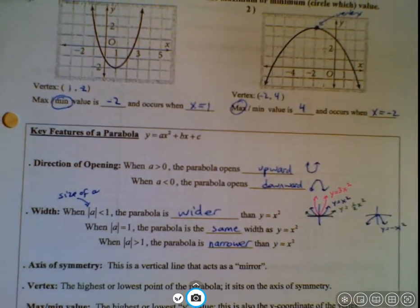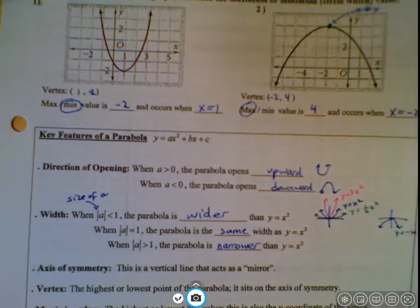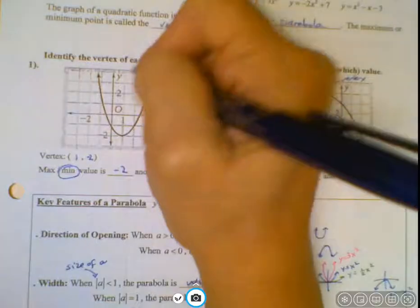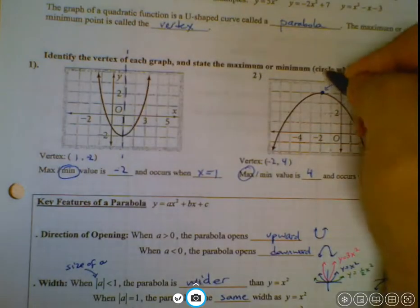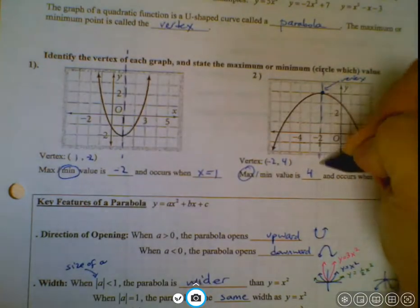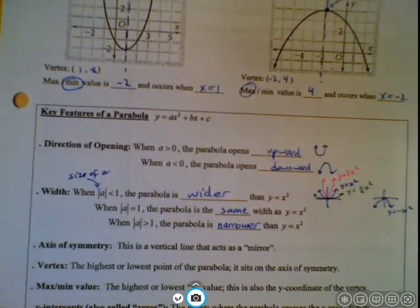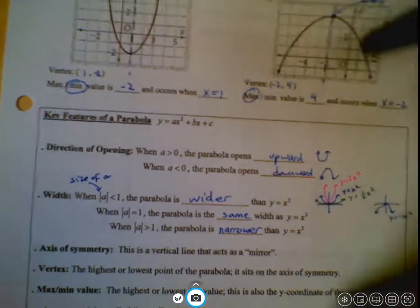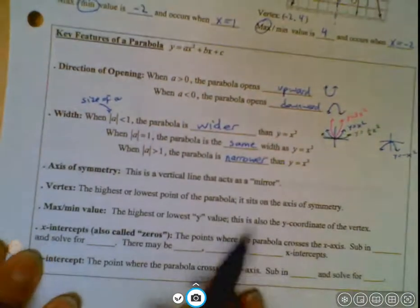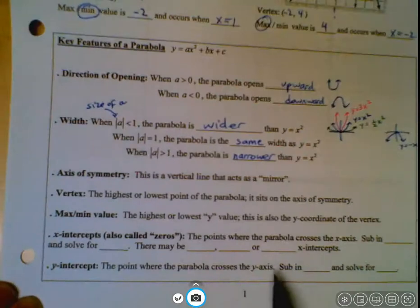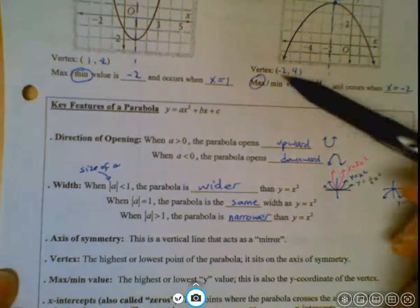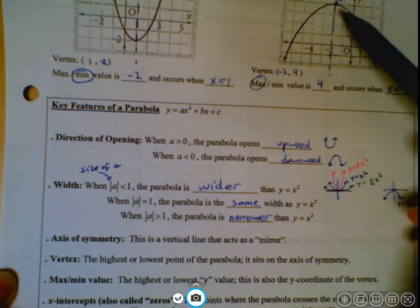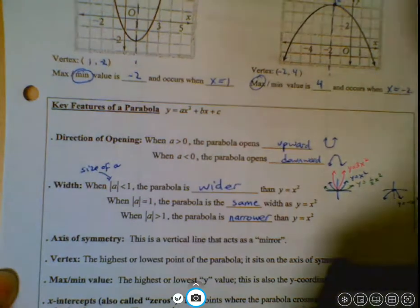The axis of symmetry is a vertical line that acts like a mirror — the parabola is the same on both sides of it. The maximum or minimum value is the highest or lowest y value, and it is also the y-coordinate of the vertex. For example, if the vertex is (negative 2, 4), the highest y is 4.